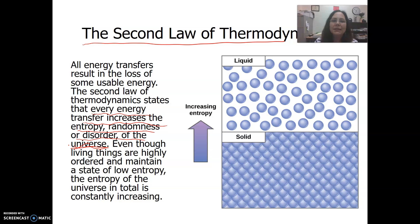It states that every energy transfer increases entropy or randomness or disorder of the universe. Entropy is a word that means disorder. And even though living things are highly ordered and living things themselves maintain a state of low entropy, low disorder, the universe, the entropy is always increasing. The entropy of the universe is constantly increasing.